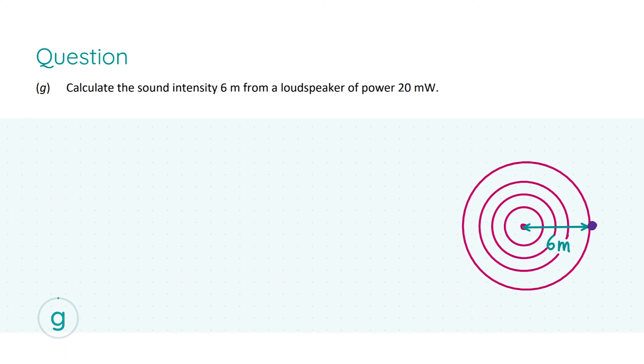Part g: we're asked to calculate the sound intensity six meters from a loudspeaker which is our source of power 20 milliwatts. The formula we're going to use is intensity equals power over area. This formula is not in the formula tables book so beware. 99% of formulas will be in the book but make sure to learn the few that are not because you will require them.